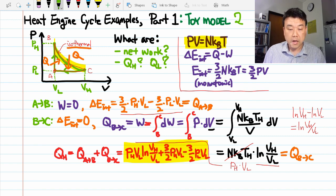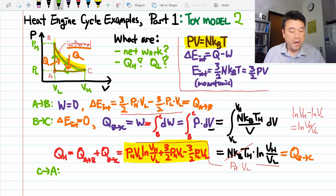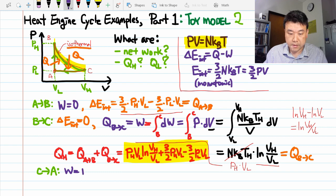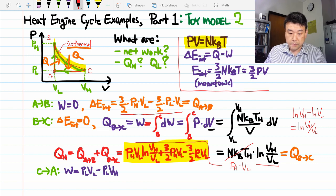Okay. We have one more process left. The isobaric contraction from C back to A. I think we've done this before. So, there is work done. That's the end point, PLVL minus the starting point, PLVH. And looking at this carefully, you can see that this is negative.